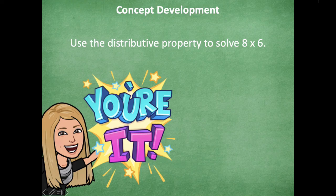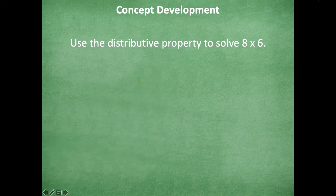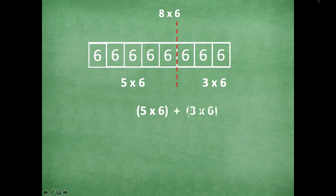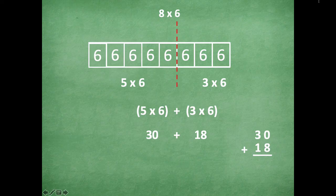All right, friends, make sure to pause if you need more time. Otherwise, here we go. Here is my tape diagram for eight times six. I broke it apart so I have five times six on one side and three times six on the other side. I know that I would add (five times six) plus (three times six). Five times six is 30 because I know those fives, and three times six is 18. So 30 plus 18: zero plus eight is eight, and three plus one is four. Eight times six equals 48.